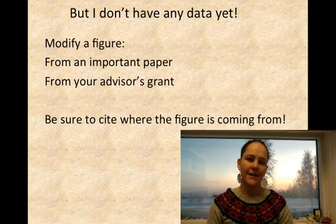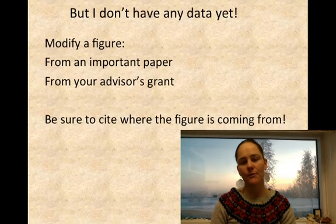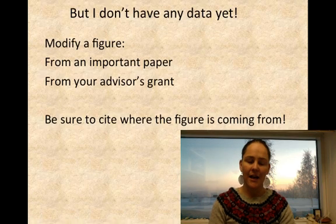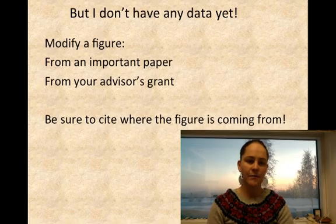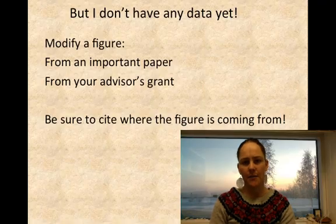One thing you may be thinking is that you don't have any data yet — you're just starting. I've shown you examples of projects I've been working on for several years, so here are some suggestions. You can modify a figure: pick an important paper, pick your favorite figure out of it, and modify it. You can pick a figure out of your advisor's grant proposal. But make sure that you cite where the figure, the data, and the information is coming from — that's really very critical. Spice it up. Make it just for this proposal. Give it a nice title, give it a nice figure caption. Annotate it — say 'right here, this is the important part.' That is all very helpful for reviewers.